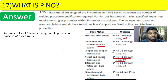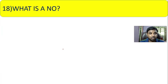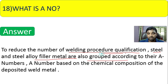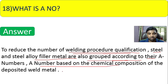Question 18: what is an A-number? Similar to P-numbers for base metals, A-numbers are used to reduce welding procedure qualifications for steel and steel alloy filler metals. A-numbers are based on the chemical composition of the deposited weld metal — that is, the weld metal deposited after welding.